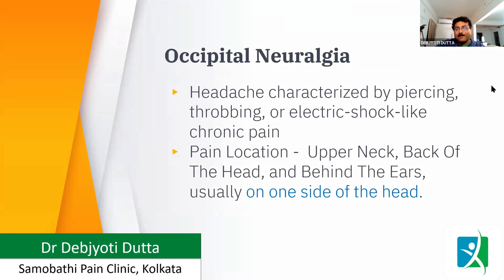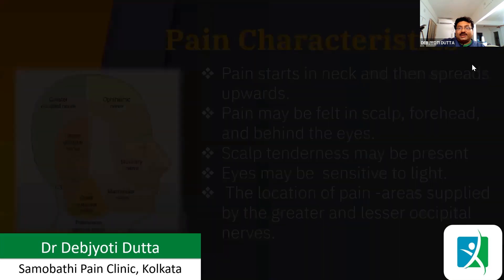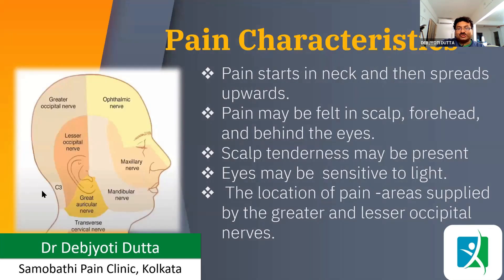It may go anteriorly, but is usually restricted to the posterior part of the scalp. Pain starts from the neck and then spreads upward. This is the territory for the greater occipital nerve, and this is for the trigeminal portion — the ophthalmic, maxillary, and mandibular. There is a concept that the trigeminal nucleus projects posteriorly, and through that interconnection, occipital neuralgia pain can also come to the anterior side, behind the eye as well.